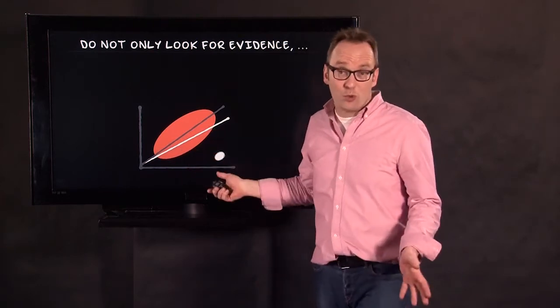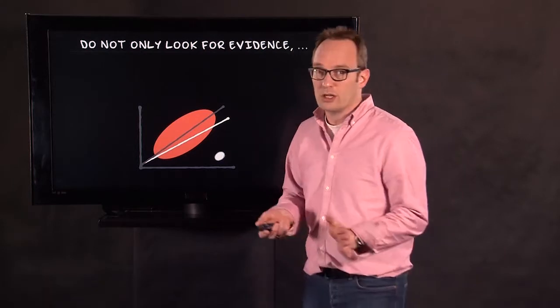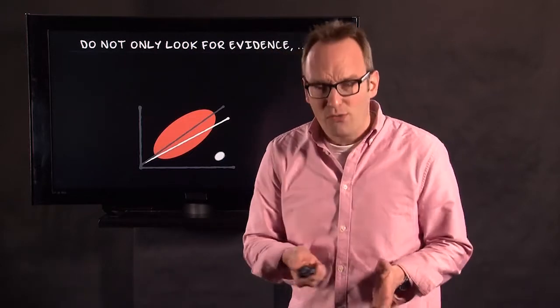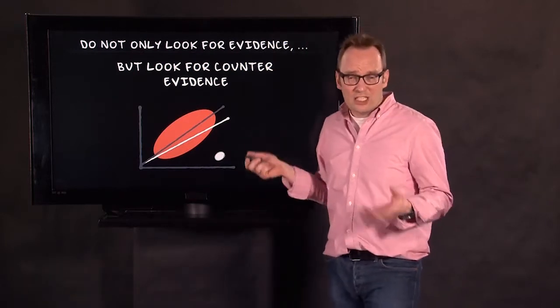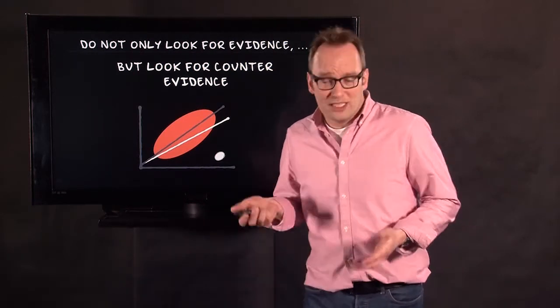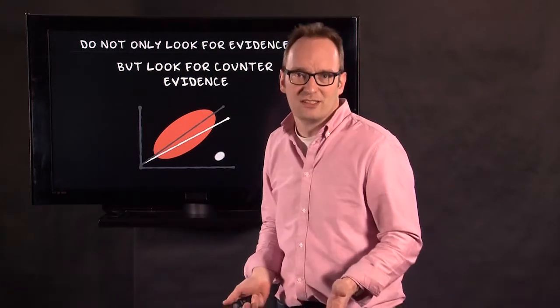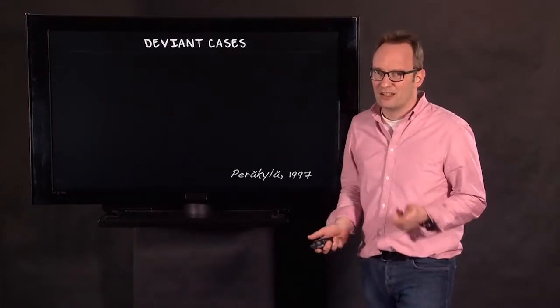If you understand qualitative research pretty well after following all these lectures, it's very good. But if you're not following at all, you are really interesting for us because something went wrong then. This is what you should do as a qualitative researcher: look for contradictory evidence, look for counter evidence. This is what you should do when you study something like the Paul is dead hoax. Look for counter evidence. Paul was in France, he wasn't dead.